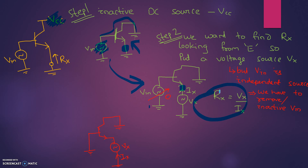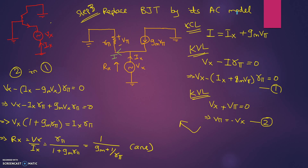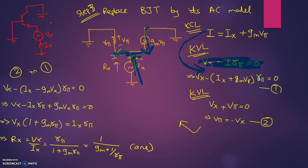R_input, or Rx, seen from the emitter terminal is Vx divided by Ix. Step three: replace the BJT by its AC model. We write the KCL equation: the current Gm·Vpi and Ix are incoming, and I is the outgoing current, so I equals Ix plus Gm·Vpi. We also write the KVL equation: Vx minus I times Rpi equals zero. We have found that I equals Ix plus Gm·Vpi, so substituting, Vx minus (Ix plus Gm·Vpi) times Rpi equals zero.